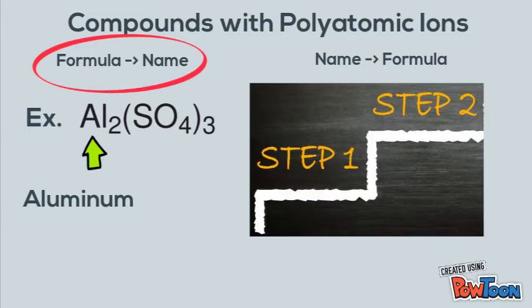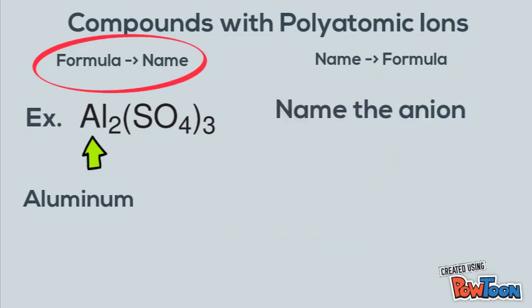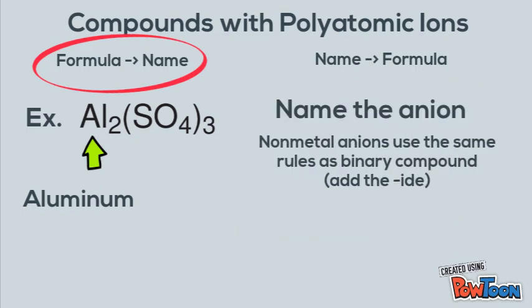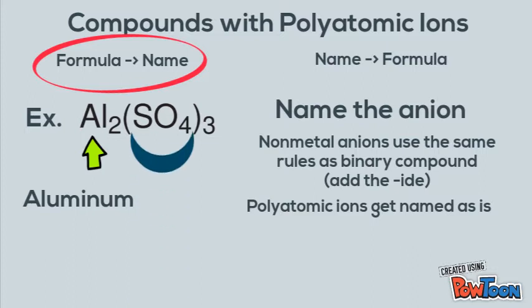Step number two is going to be to name the anion — that's the negative one. Nonmetal anions use the same rules as binary compounds, where you add the -ide ending, and polyatomic ions get named as is. So in this case, SO₄ is your polyatomic ion. You look that up on your list and it's sulfate. So when you put the two together, your answer is going to be aluminum sulfate.